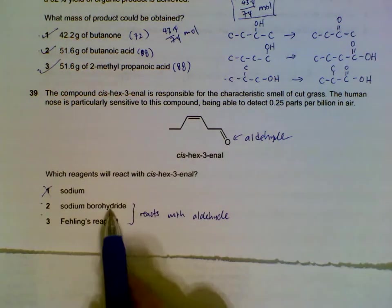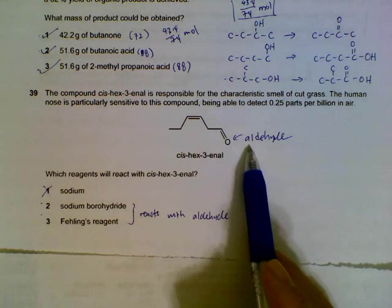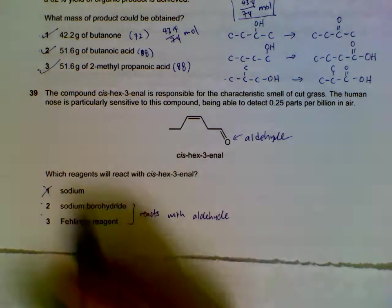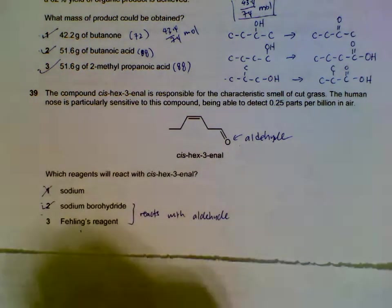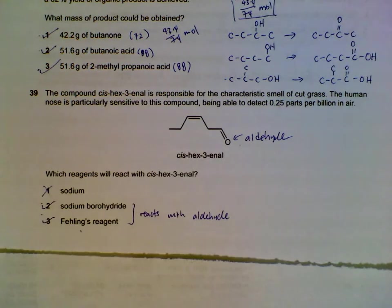Sodium—there's nothing for sodium to react with. Sodium borohydride will reduce your aldehyde to an alcohol. Fehling's reagent will react with your aldehyde to form a brick red precipitate, so only two and three are correct.